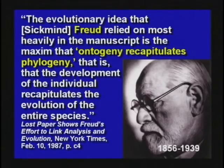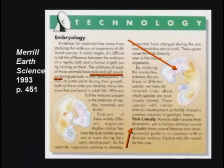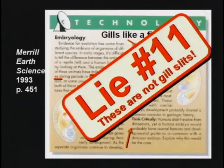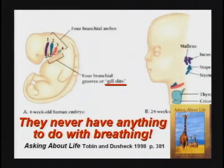That's the ontogeny recapitulates phylogeny. The idea that Freud relied on was that the development of the individual recapitulates the evolution of the entire species. This is stupid and dangerous. They tell the kids the embryo — the baby growing in the mother — has gills like a fish. That's a lie. Those are not gill slits. Those little folds of skin you see on the embryo grow into bones in the ear and glands in the throat.